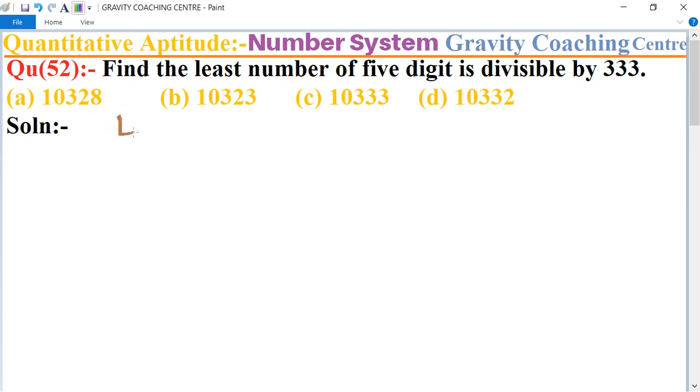We know that the least five digit number is 10,000. So now we divide 10,000 by 333.